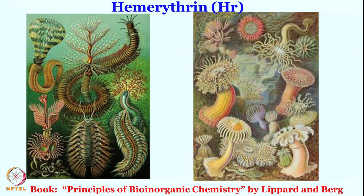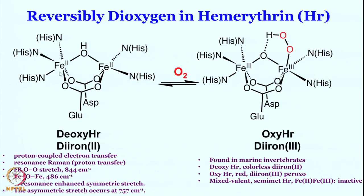It is a diiron center responsible for oxygen carrying in those species that do not have hemoglobin — mainly those which are marine invertebrates. As you have seen, 3 nitrogen or histidine coordinations are on one iron and 2 histidine coordinations on the other iron. They are linked by aspartate and glutamate — these are bridging carboxylate linkages. In addition, there is also a hydroxyl bridging between them. This is a crystallographically characterized intermediate, making clear what we have in deoxy-hemerythrin.